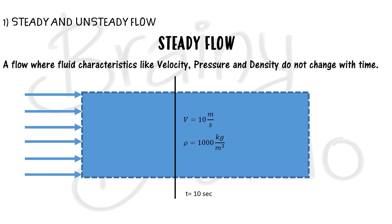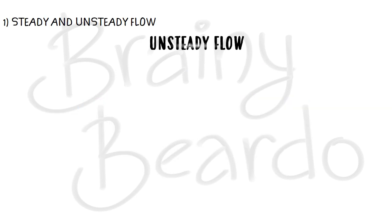One more thing to understand: I am defining this only at this particular section. At a different section or different point, the velocity might change — but with respect to time, at that particular section the velocity, temperature, and density should not change. Such a flow is called steady flow.